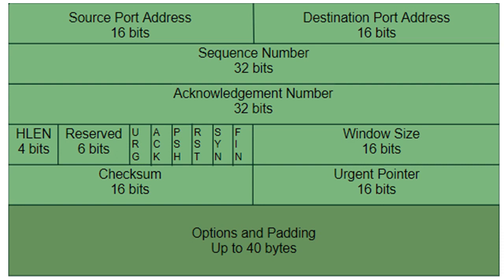Checksum is a 16-bit field used to provide basic protection against transmission errors. TCP uses the checksum field in its header to control transmission errors. The receiving side calculates the checksum on the received data using the same algorithm as the sender and compares its value to the checksum passed in the header. Therefore, it is part of the error control process of TCP.